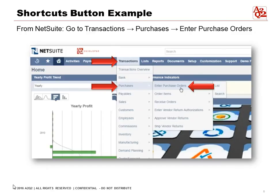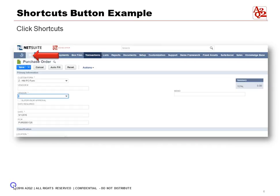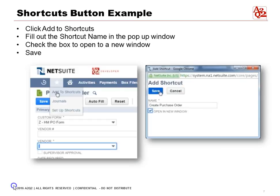From the NetSuite menu, go to Transactions > Purchases > Enter Purchase Orders. It will bring you to the Purchase Orders page. From here, click Shortcuts, then click Add to Shortcuts, and a pop-up window will appear.